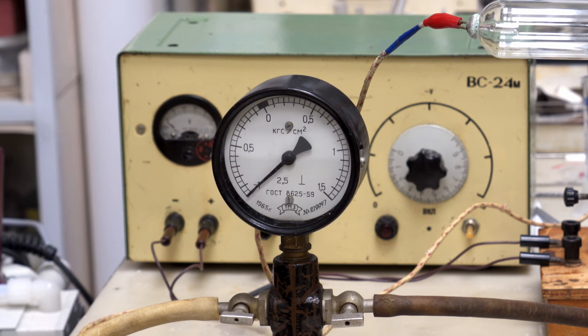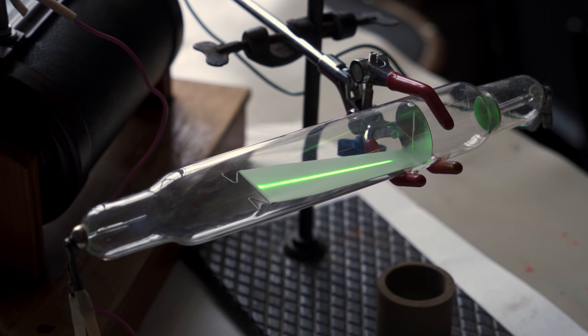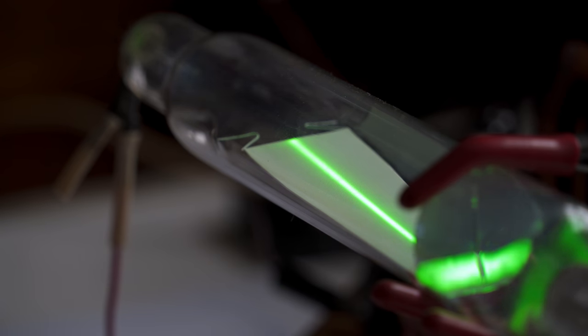Take a gas discharge tube and pump out almost all the air from there. Apply voltage to the cathode and anode. Electrons begin to fly out from the cathode. Some of them are delayed by the barrier and some pass through a slit.